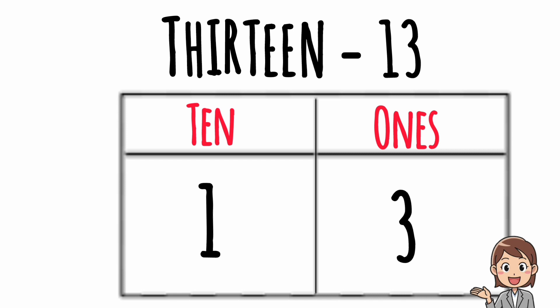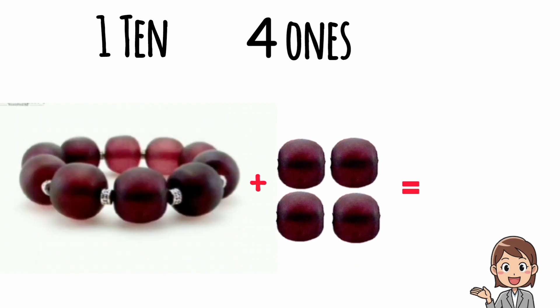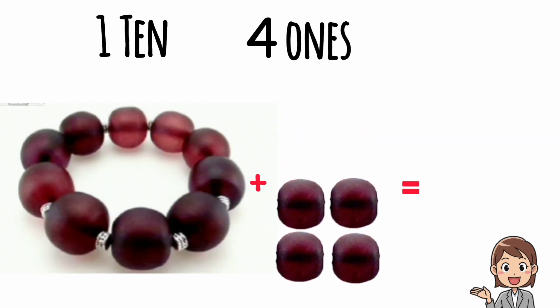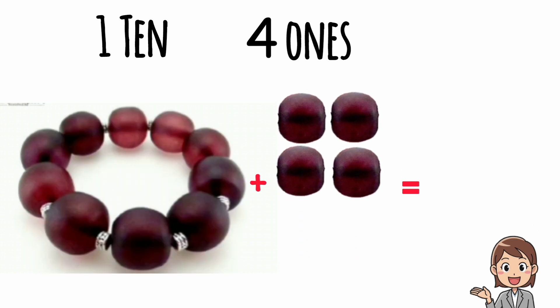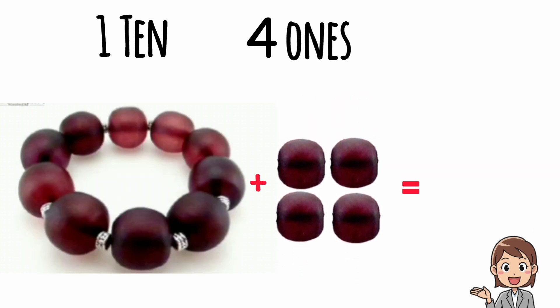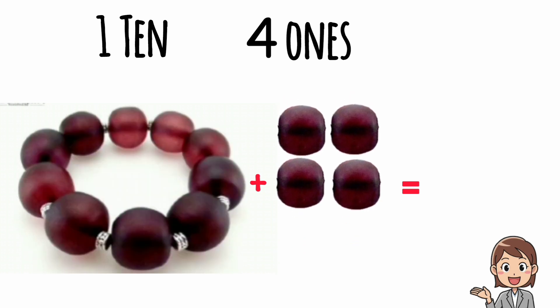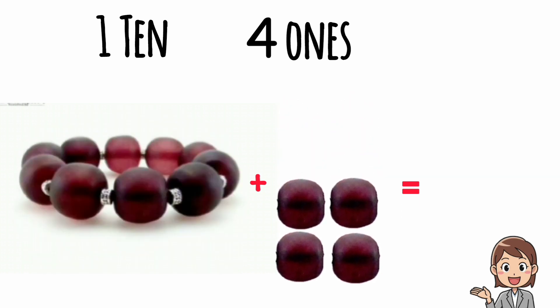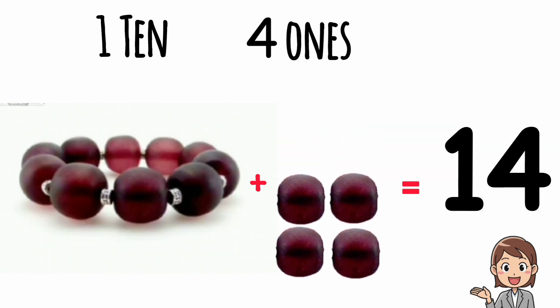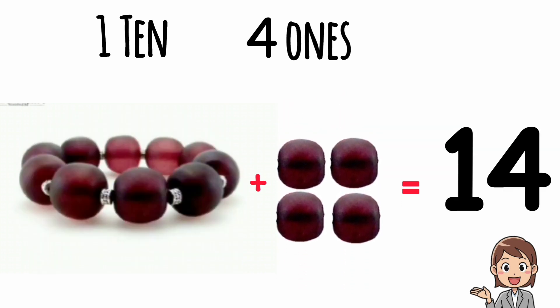I have here one bracelet and four beads. One bracelet means one ten and four beads means four ones. So one ten and four ones make fourteen. Fourteen.